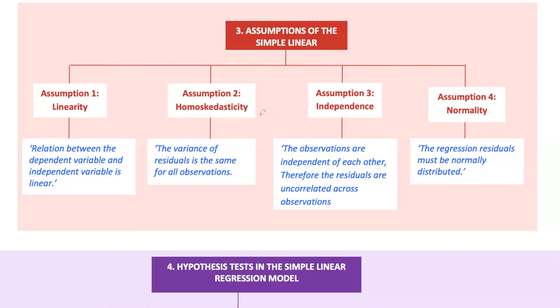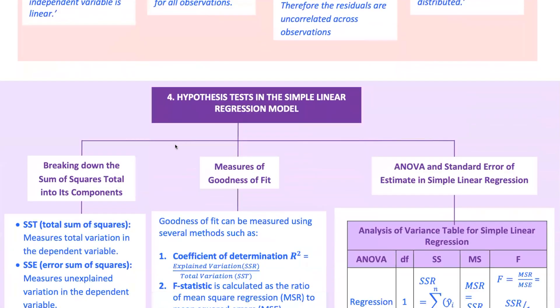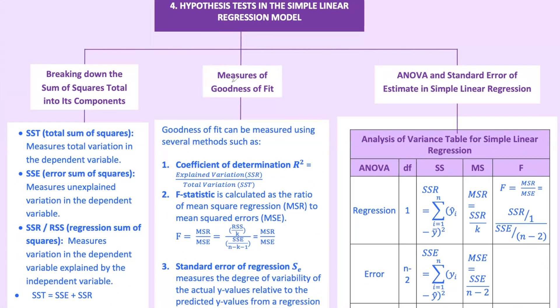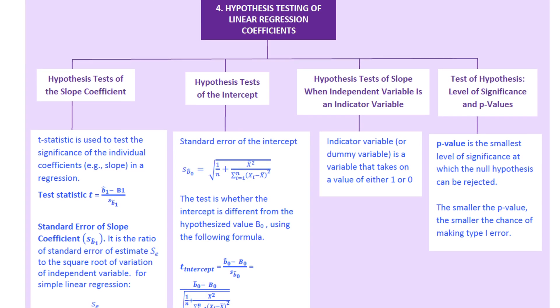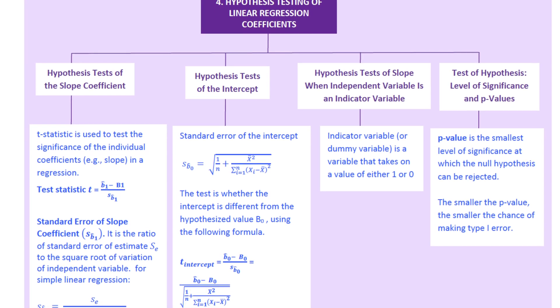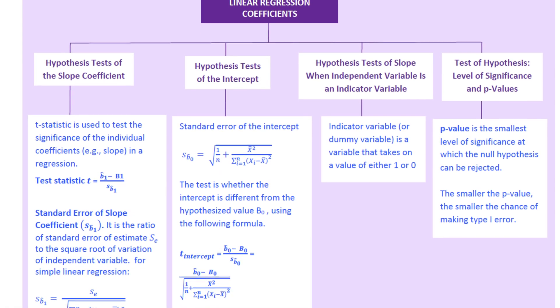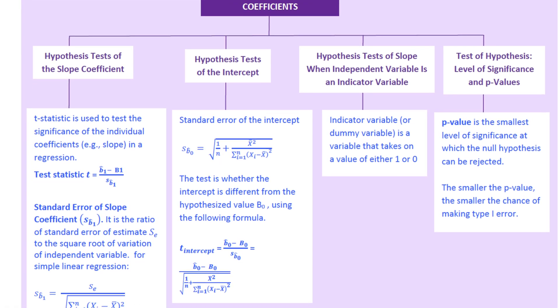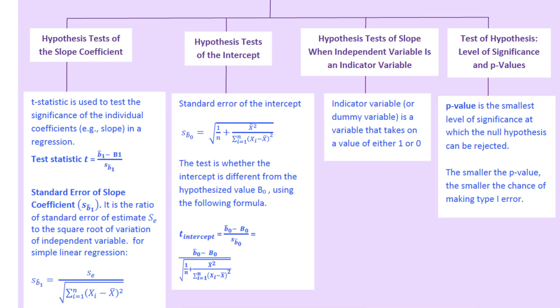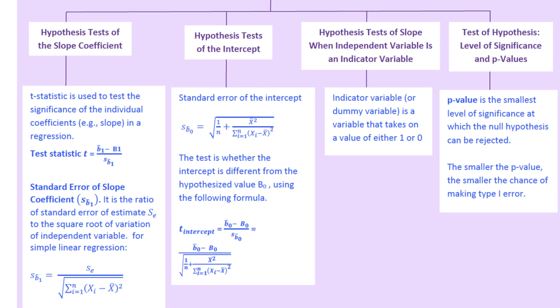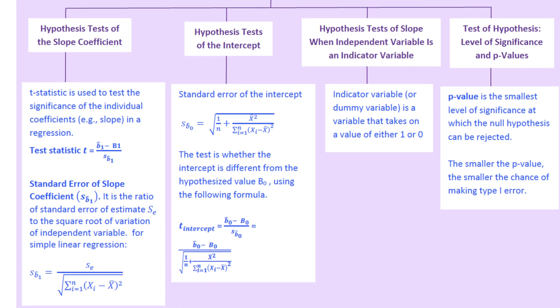We often want to test whether the relationship we've estimated is statistically significant. This involves hypothesis tests. F-test tests whether at least one of the regression coefficients is different from zero. The null hypothesis is that all regression coefficients are zero, meaning that x has no effect on y. The alternative hypothesis is that at least one coefficient is not zero. T-test tests whether a specific regression coefficient is significantly different from zero.